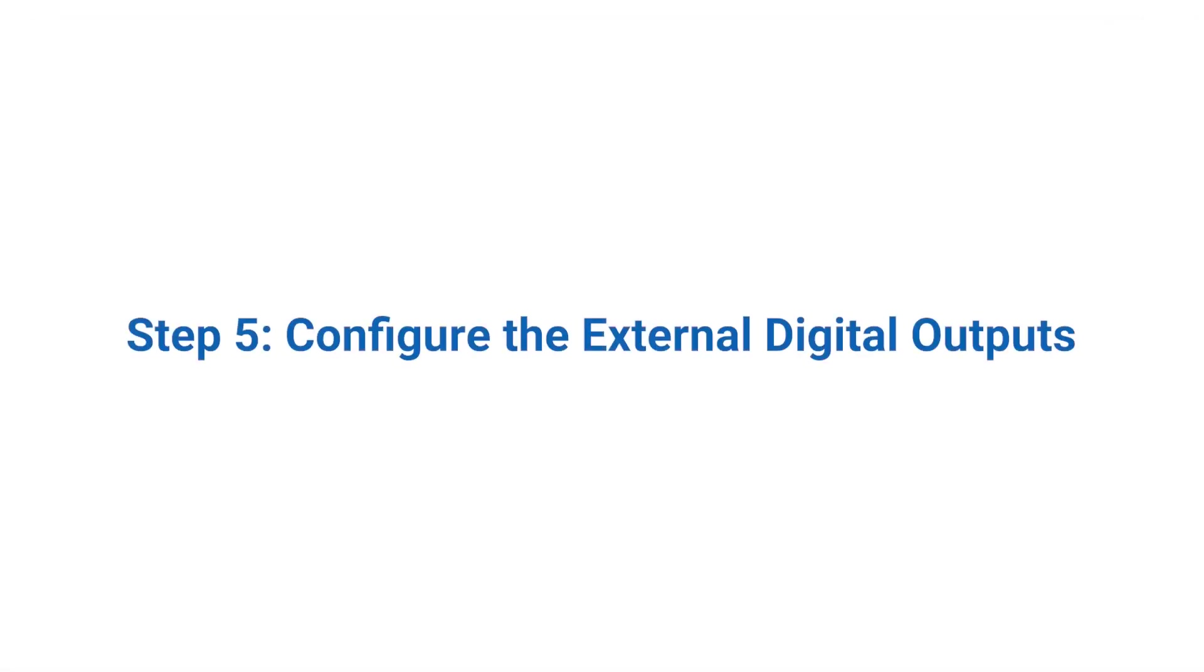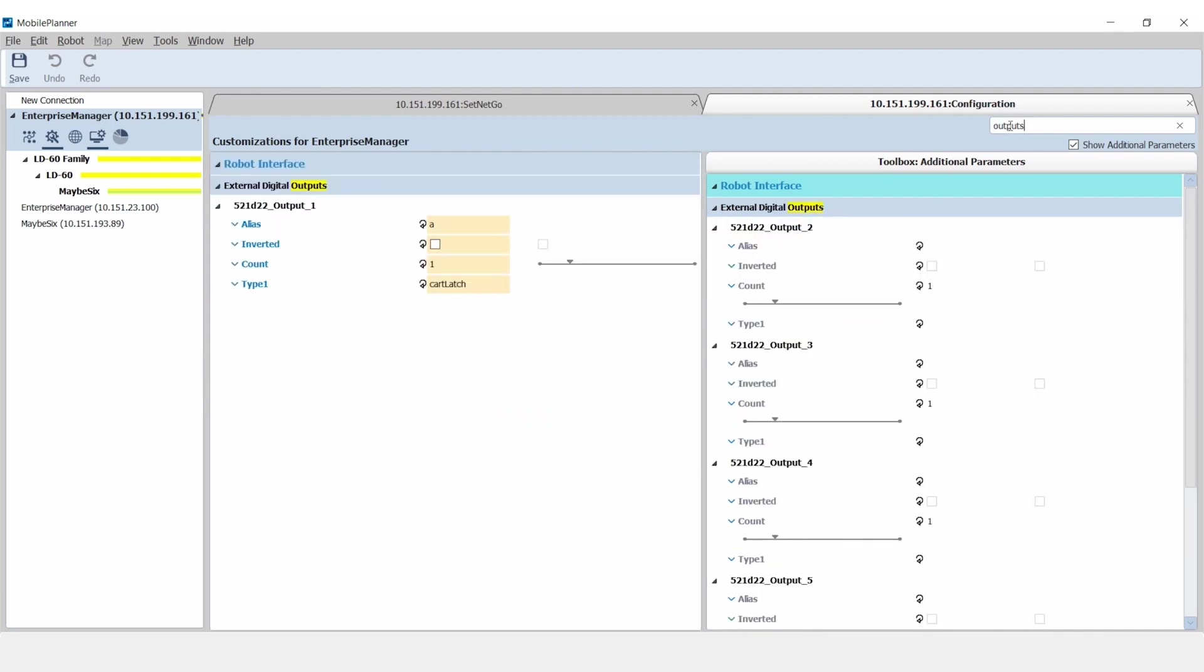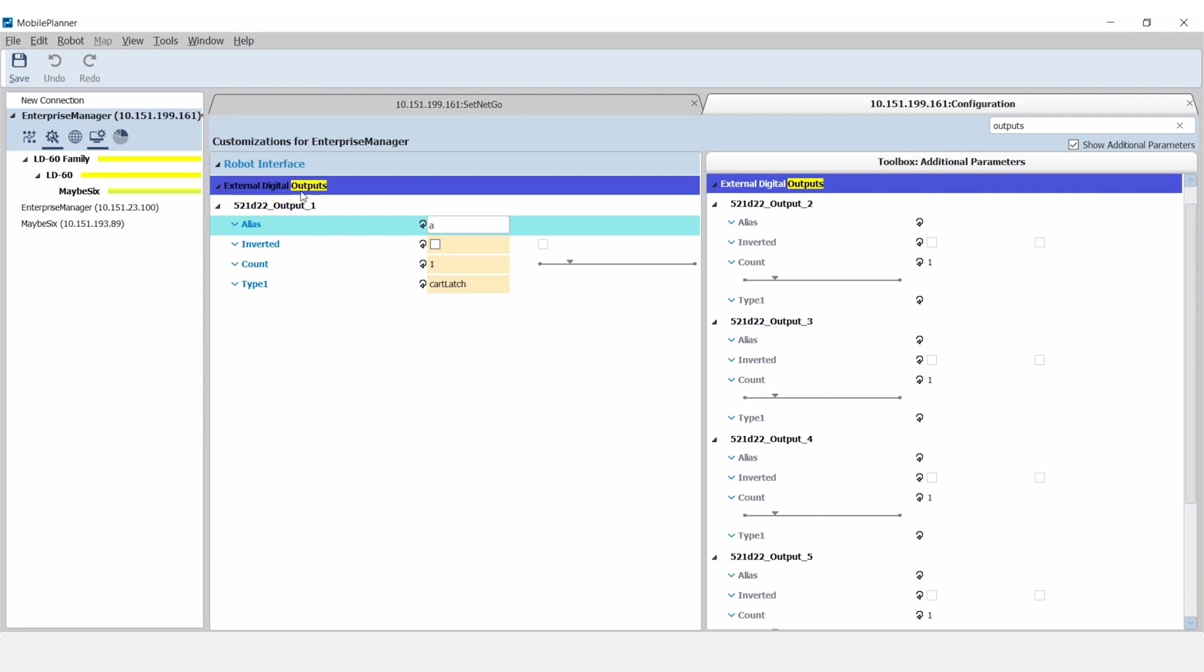Step 5. Configure the external digital outputs. From the host's configuration tab, select the external digital outputs menu. The outputs are numbered 1 through 6, each with a six-digit prefix matching the Mobile I.O. Box's identifier. Set output type to door for use with doors, and also set output type to custom to enable reading and writing the outputs via Mobile Planner. Assign an alias to each output to make it easier to associate the output with other functions.